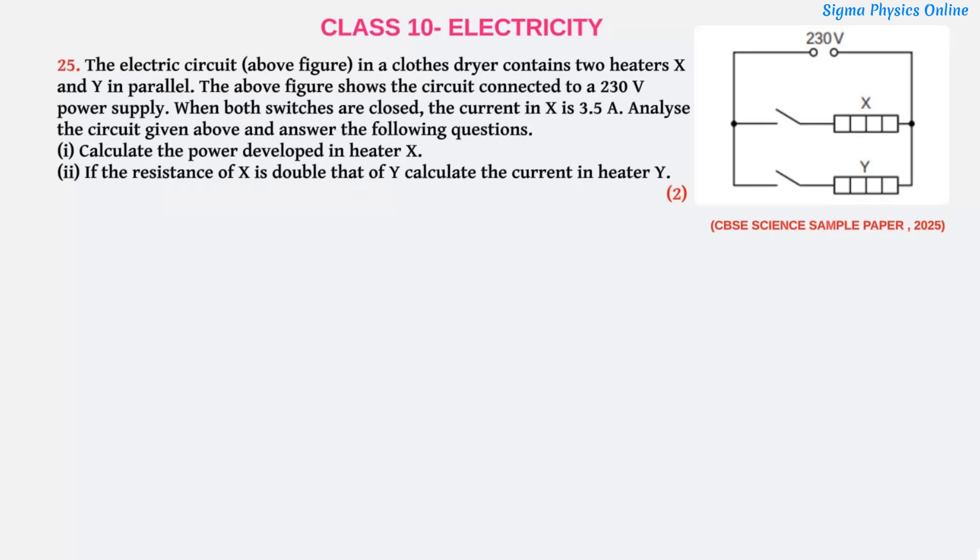The question is a 2 mark question. The electric circuit in a cloth dryer contains two heaters X and Y in parallel. The figure shows the circuit connected to a 230V power supply. When both switches are closed, the current in X is 3.5A.